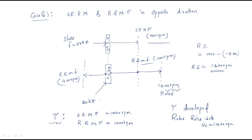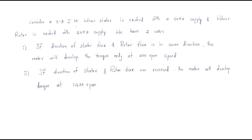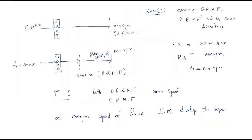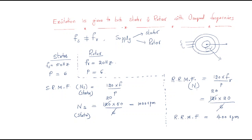Consider a three-phase induction motor whose stator is excited with 50 Hz supply and rotor is excited with 20 Hz supply. Case 1: if stator flux and rotor flux are in the same direction, the motor develops torque only at 600 rpm. Case 2: if stator flux and rotor flux are in opposite directions, the motor develops torque at 1400 rpm. This concludes our discussion on excitation given to both stator and rotor with unequal frequencies.